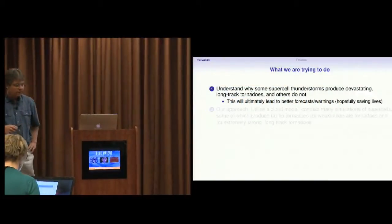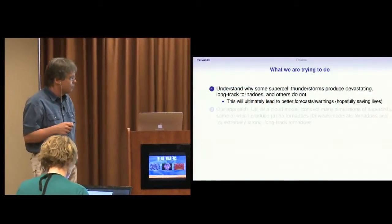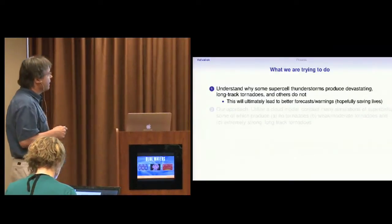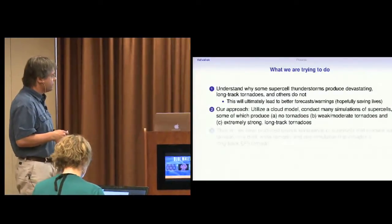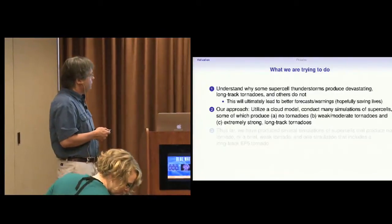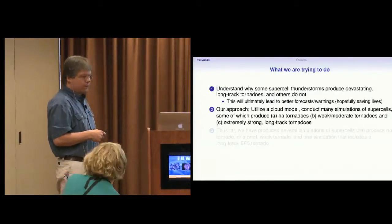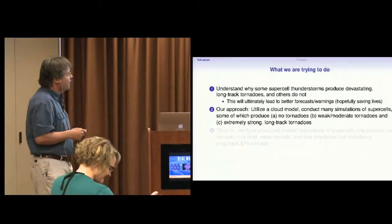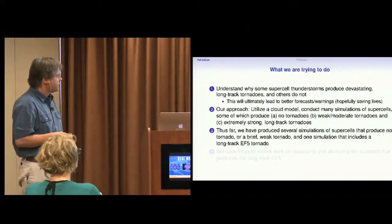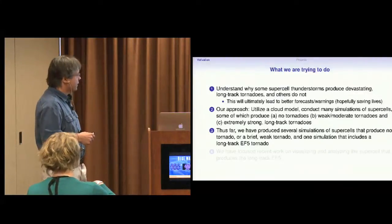What are we trying to do? We're trying to understand what goes on inside of really big supercells that produce really bad tornadoes and what differentiates these from storms that do not. In fact, it's very easy to simulate supercells that don't produce tornadoes. I've been doing that for quite a while. It's a little bit harder to get really weak ones, but it's very difficult to get extremely strong long track tornadoes.